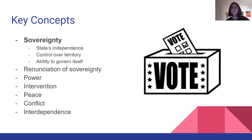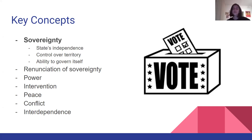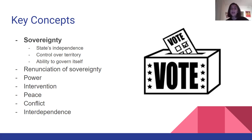Sovereignty, by definition, is the ability of a state to have its own independence, control over territory, and ability to govern itself. There are four main types of sovereignty, such as domestic sovereignty, interdependent sovereignty, international legal sovereignty, and Westphalian sovereignty.